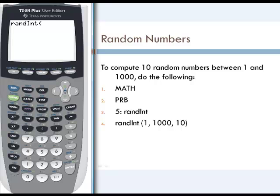In this particular case, we're looking to generate 10 random numbers between 1 and 1,000. So our minimum number will be 1, and then we'll put a comma. Our maximum number will be 1,000, and then we'll put a comma.